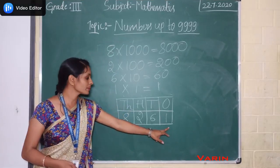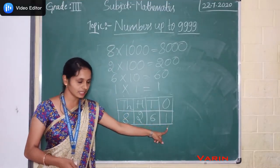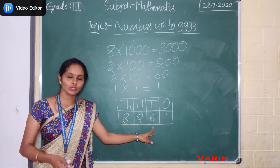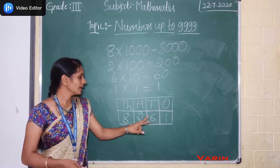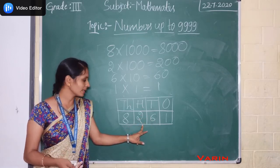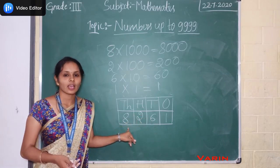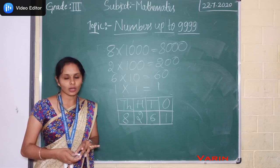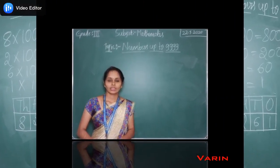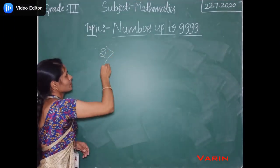If the number is present in the ones place, we multiply it by 1. If it is in the tens place, we multiply by 10. If it is in the hundreds place, we multiply by 100. If it is in the thousands place, we multiply by 1000. This is about place value. Let us learn another example, Example 2.